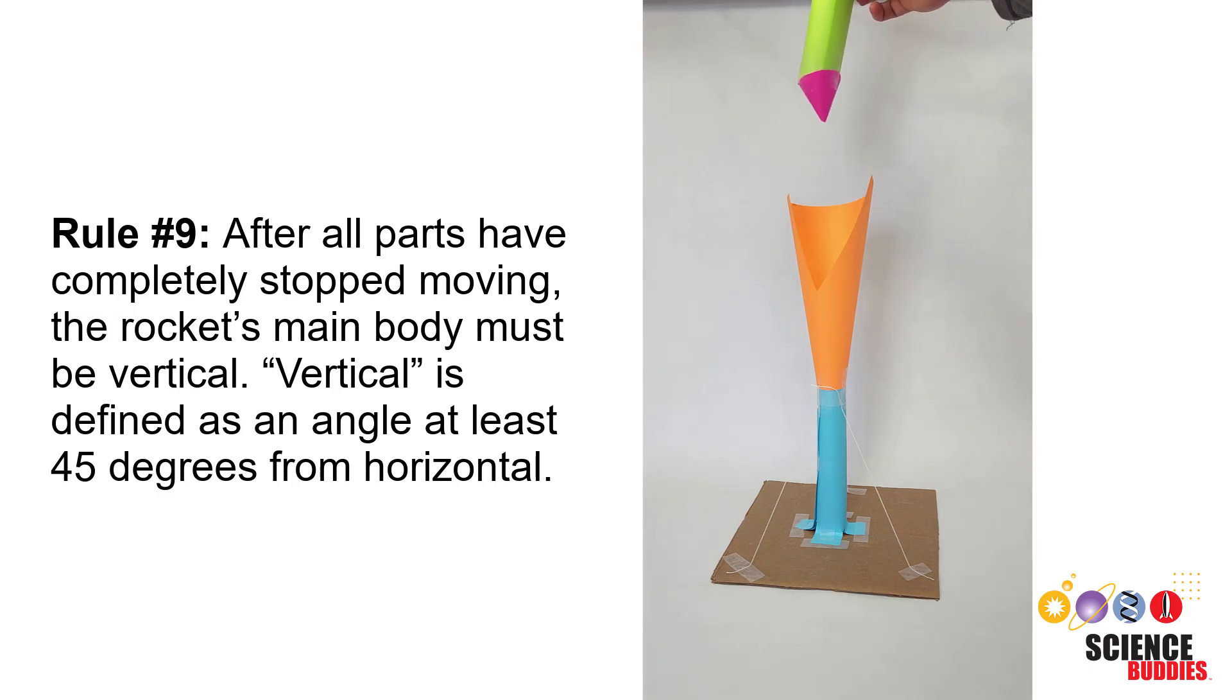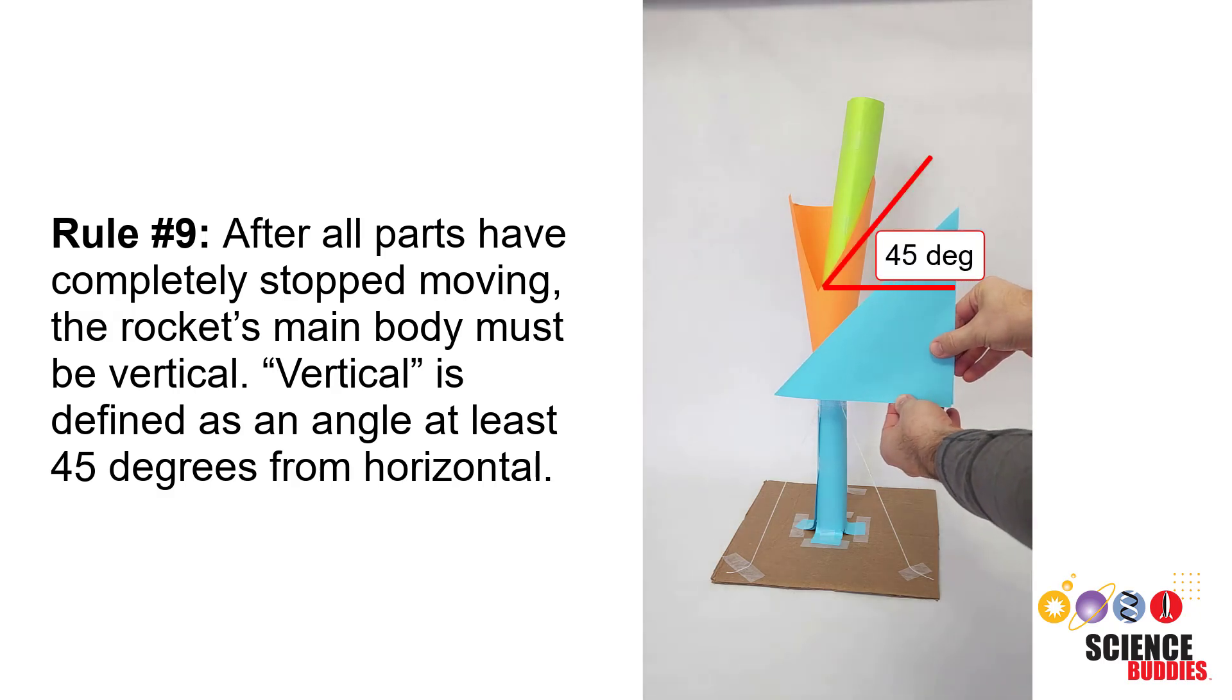Rule nine: After all parts have completely stopped moving, the rocket's main body must be vertical. Vertical is defined as an angle at least 45 degrees from horizontal, as shown here.